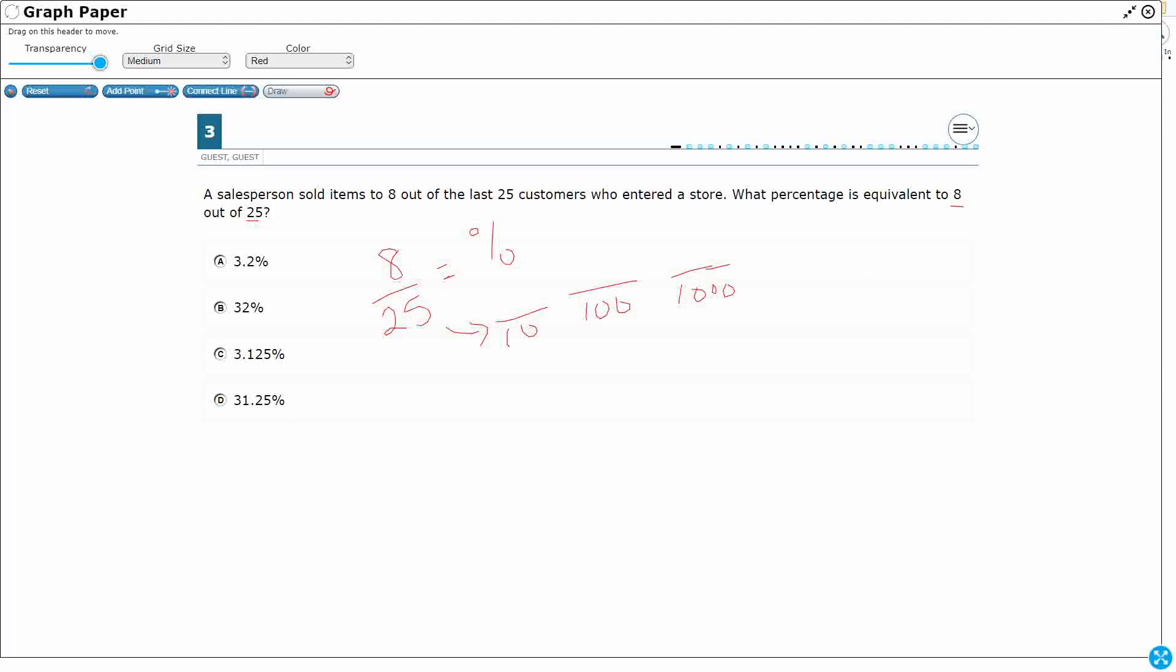Now, this is why, because hopefully you're seeing place value. Hopefully you're seeing, this is my ones place, but I've got my tenths place, my hundredths place, and my thousandths place. So, if I could change my denominator into 10, 100, or 1,000, then I will match one of these three spots. And then it should be pretty easy.